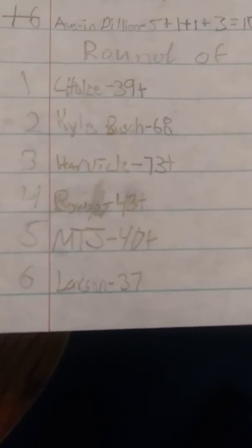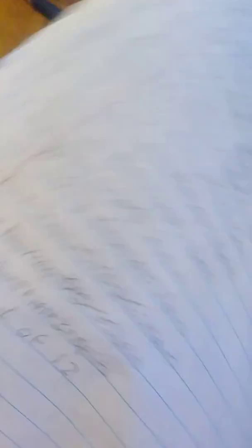Austin Dillon has 10. Chase Elliott, Kyle Busch, Kevin Harvick, Clint Bowyer, Martin Truex Jr., Kyle Larson, Joey Logano, Brad Keselowski, Kurt Busch, Eric Almirola, Eric Jones, and Alex Bowman all made it to the round of 12.